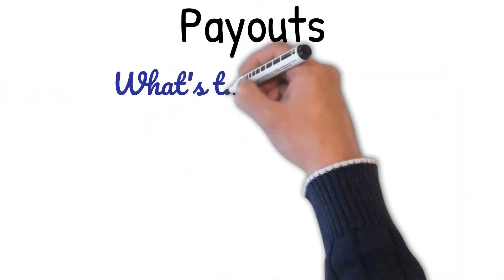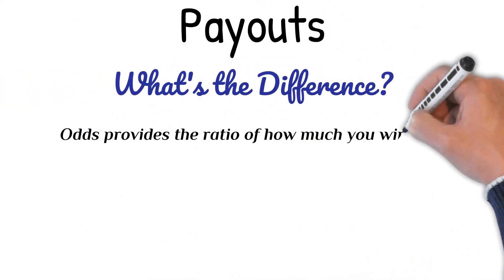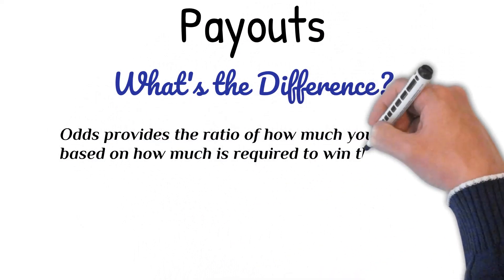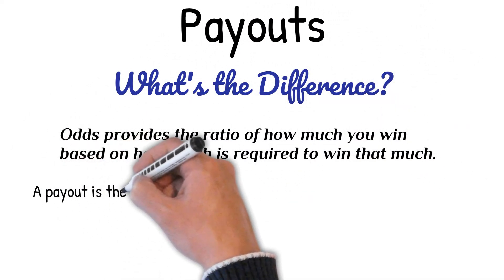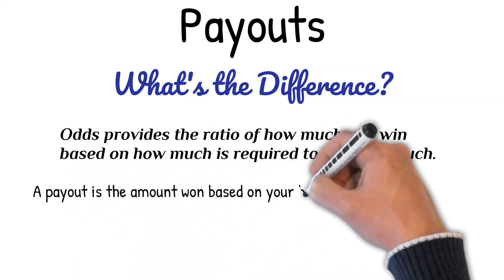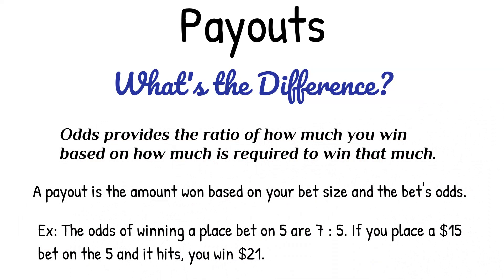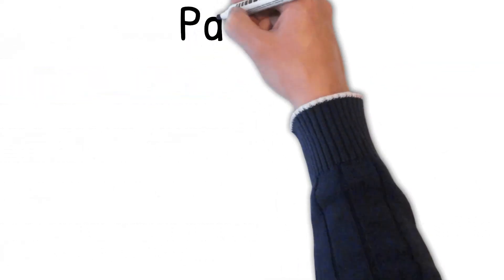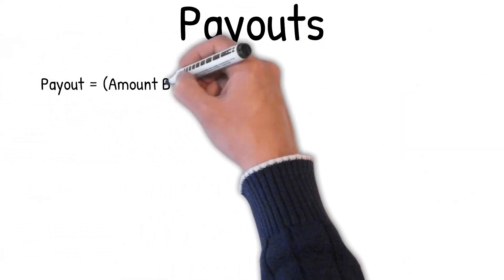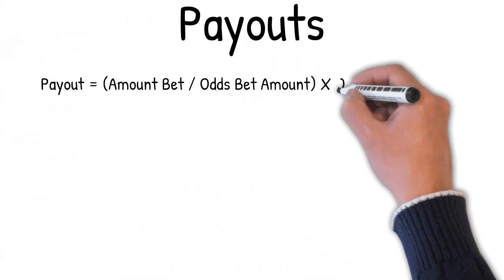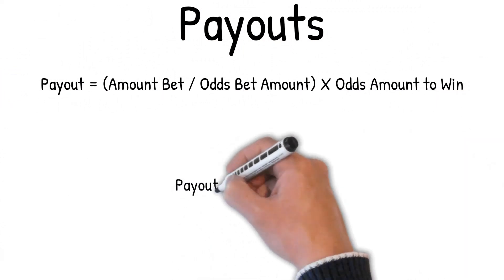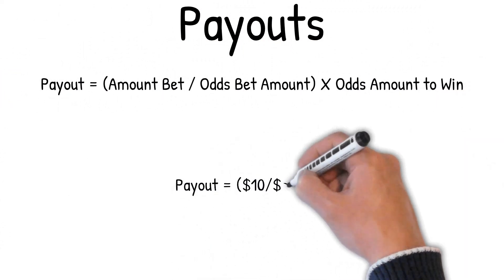Payouts — what's the difference? Odds provide the ratio of how much you win based on how much is required to win that much. A payout is the amount won based on your bet size and the bet's odds. To calculate the payout, we take the amount bet divided by the odds bet amount, which gives us the units bet, and then multiply that by the odds amount to win. So the payout equals the units bet times the odds amount to win.